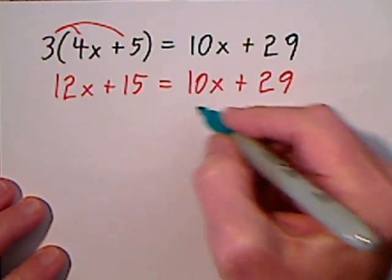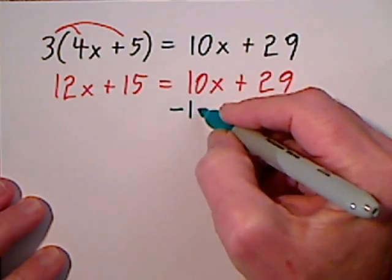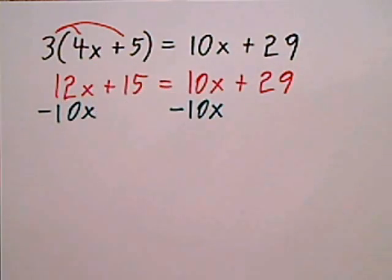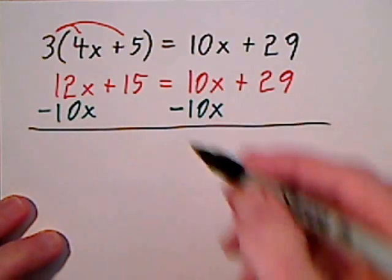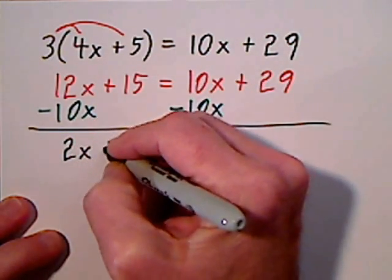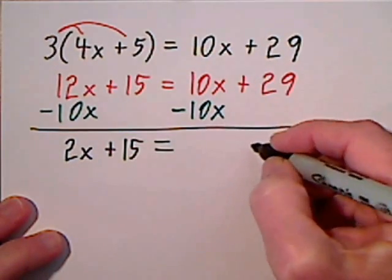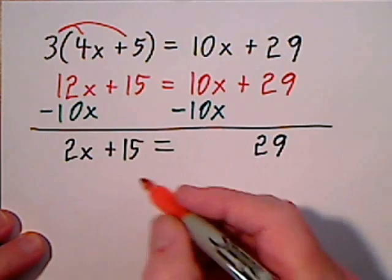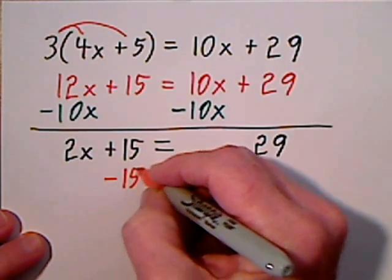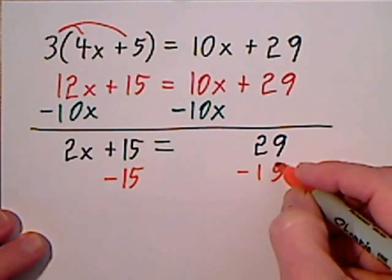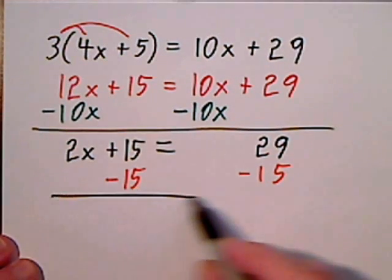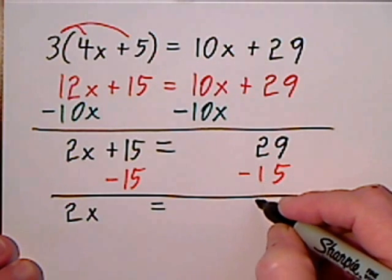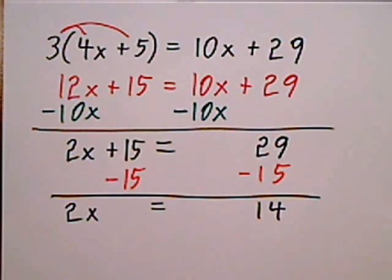I'm going to get rid of 10x. It's held by addition or subtraction, so I'll achieve the opposite operation by pairing it up with the same thing with the opposite sign. I draw a line under everything and bring down what's left. This gives us 2x, still have plus 15. Here we've got 29. Now you want to get rid of this 15 — it's held by addition or subtraction. You achieve the opposite operation by pairing it up with the same thing with the opposite sign. Put a line underneath and bring down what's left.